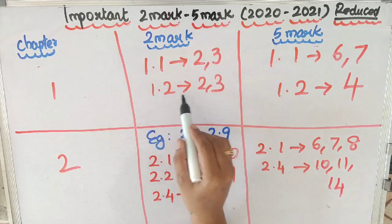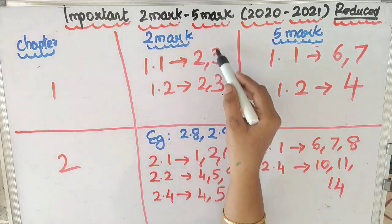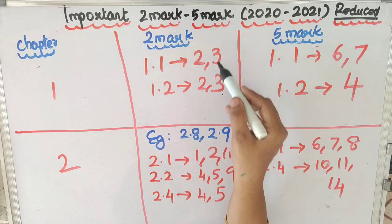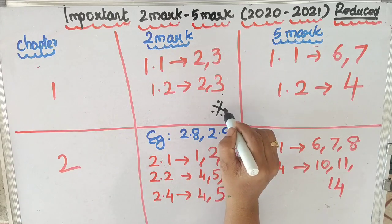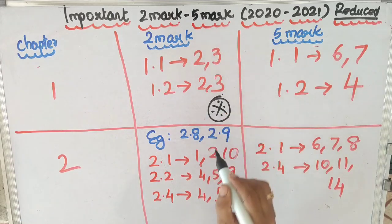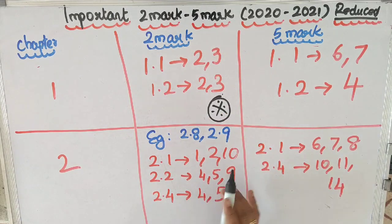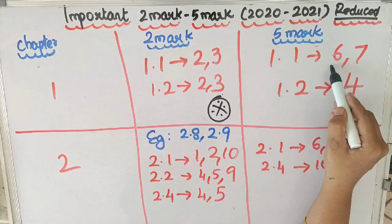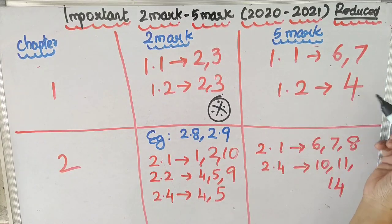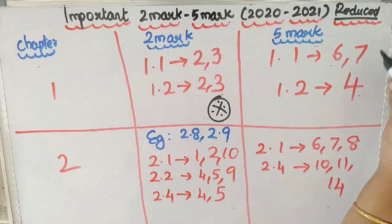In the first chapter, 1.1 exercise questions 2 and 3 are important. 1.2 exercise questions 2 and 3 are important. These are the 2-mark questions in the first chapter. For the 5-mark questions, 1.1 exercise questions 6, 7, and 4 are important.